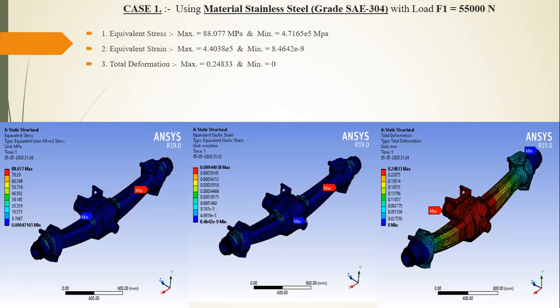For Case 1, stainless steel SAE 304 with 55,000 N load and 5,000 N at the dome: the maximum equivalent stress is 88.07 MPa and the minimum is 0.17 MPa. The maximum strain is 4.40×10⁻⁵ and minimum is 8.46×10⁻⁹. The total deformation is 0.24 mm. Fixed constraints are applied at the axle ends.